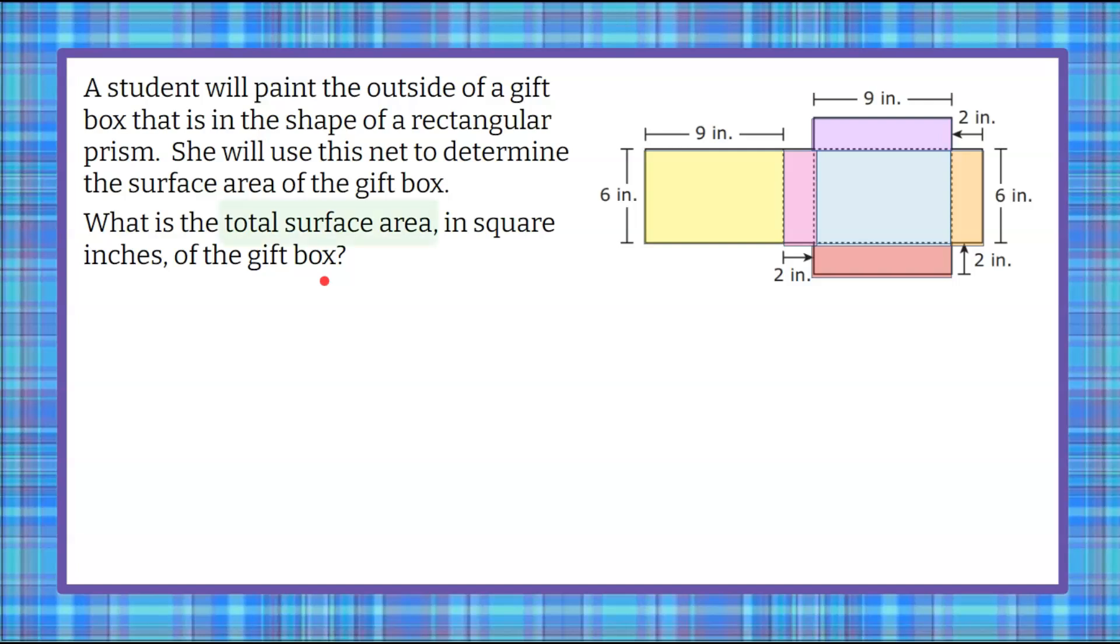Welcome back. So we're finding the total surface area, which means we're going to take every rectangle in this net and we're going to find the area and add them together. So we can see that we have the student that has this gift box and they've unfolded it so that they can see each of the rectangles and measure them. They've provided us with the measurements.